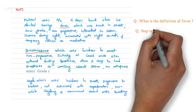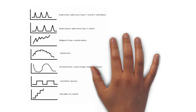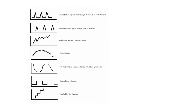What is step ladder fever and where do you find it? Step ladder fever is seen in typhoid. Intermittent fever is seen in abscesses. Pel-Epstein fever is seen in cyclical changes or Hodgkin's lymphoma. Malignant tertian fever is seen in cerebral malaria. Simple cotidian fever is seen in falciparum malaria. Simple tertian fever is seen in vivax and ovale malaria. Take a screenshot of this chart.